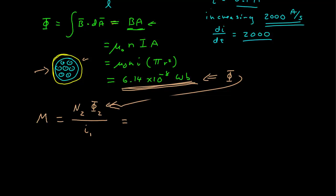We know how many coils there are on the outer one, that was 20, and we've calculated this flux, 6.14 times 10 to the minus 8, and the current through the first coil was 0.1 amps. Now we can find the mutual inductance, which is 1.23 times 10 to the minus 5 henrys.